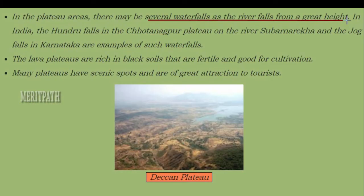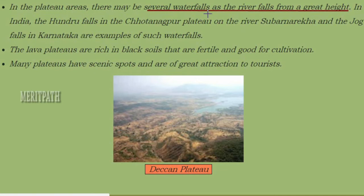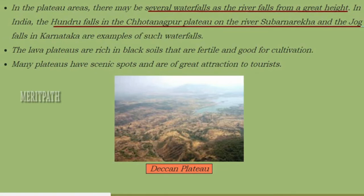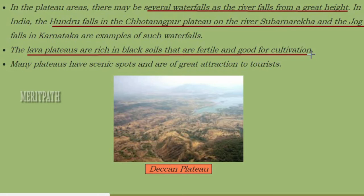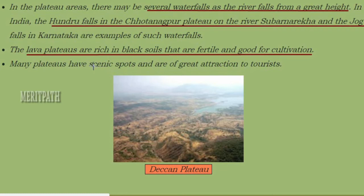In mountains and plateaus, water falls from a great height, giving us waterfalls. In the Chota Nagpur area, we have Hundru Waterfalls on the river Subarnarekha, and we also have Jog Waterfalls in Karnataka. Lava plateaus are rich in black soil, which is very beneficial for agriculture. These scenic areas are beautiful spots.